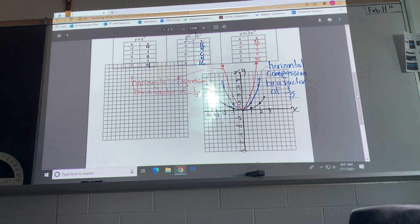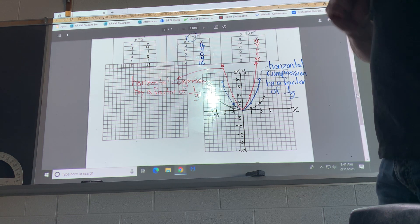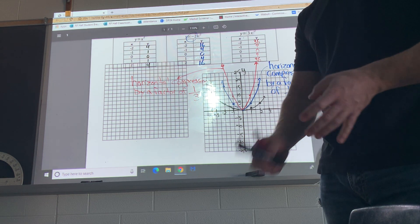I know it's a little bit tough to read that one, but it says horizontal compression by a factor of 1 over 3.